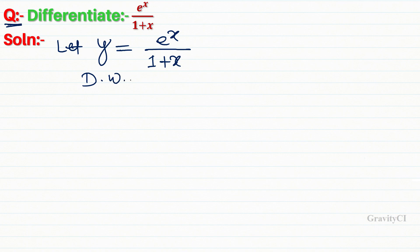Now differentiate with respect to x. So dy upon dx equals d by dx of e to the power x upon 1 plus x.